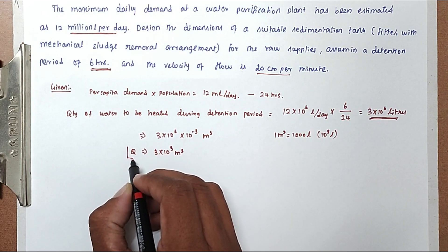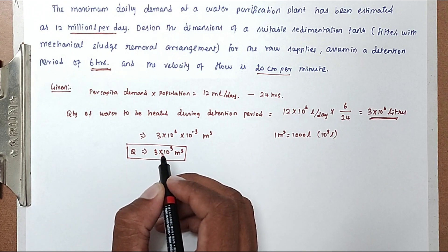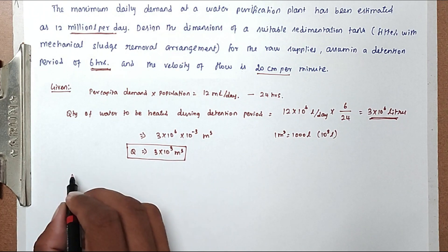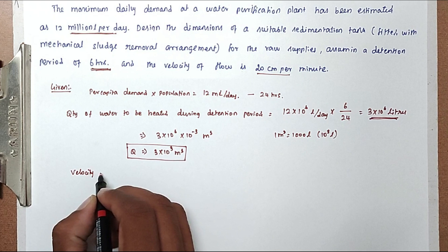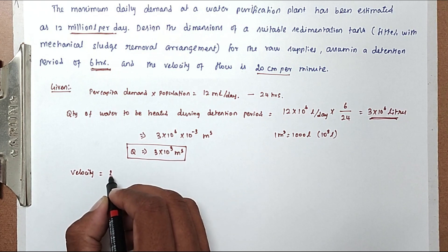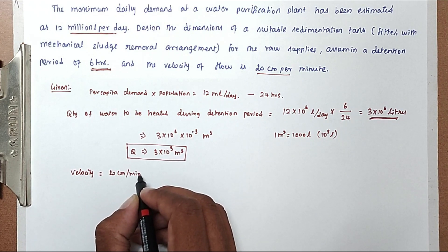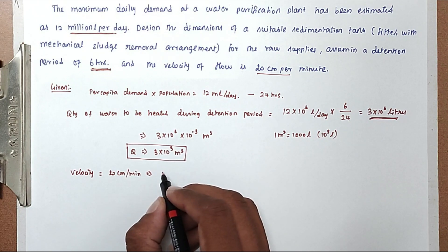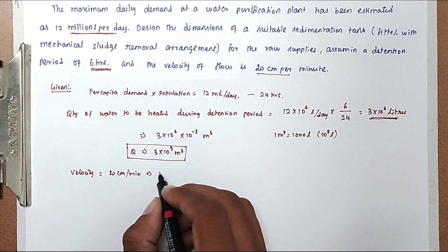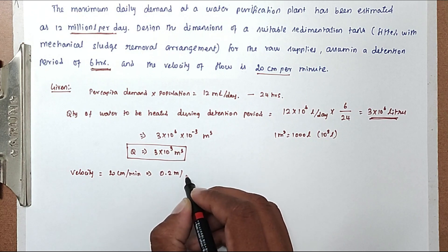This is the main quantity of water we have to treat. The velocity is given as 20 centimeters per minute. We can convert into meters per minute, so now it is 0.2 meters per minute.